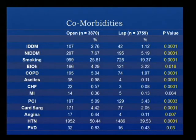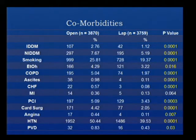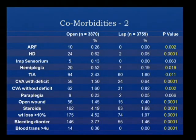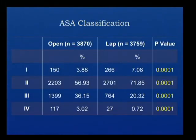When comparing comorbidities, the majority were significantly higher in the open group, including diabetes, smoking, alcohol, COPD, ascites, congestive heart failure, history of coronary interventions, cardiac surgery, angina, hypertension, peripheral vascular disease, renal complications, and history of stroke. Overall, the open group was relatively sicker than the laparoscopic group when comparing comorbidities.